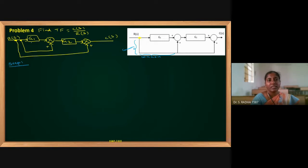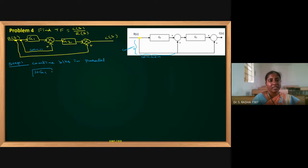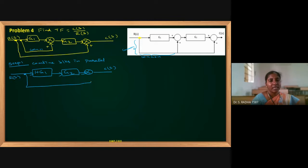Now going to step 1. You can see two parallel paths — here gain equals 1 because no blocks are present. Both are in the forward direction, so we can combine blocks in parallel. The rule is: combine blocks in parallel — if two blocks are in parallel, we add them. Gain equal to 1, so 1 plus G1 is the combined result. After that, G2 follows, and then a summing point. R(S) is the input and C(S) is the final output.